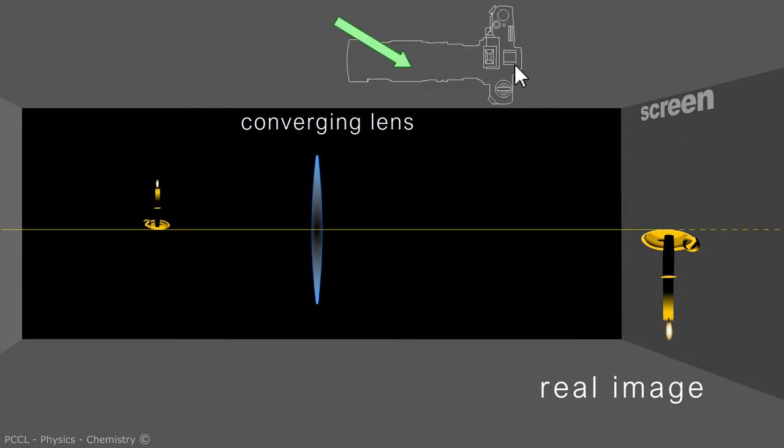With the camera too, the image is formed on a sensor. It's real. For the smartphone which has a camera, this is also the case. And for the eye, like a camera, it's the crystalline lens. Here, that is the converging lens and the image is formed on the retina.